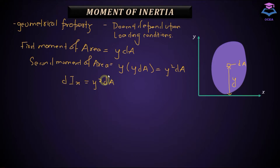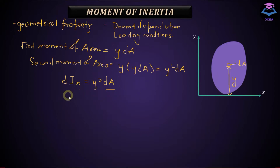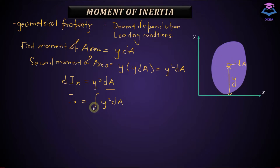This is the moment of inertia for the differential element with respect to this axis. If you want the moment of inertia for the whole plane area, you integrate both sides. The left-hand side becomes IX and the right-hand side becomes the integral of Y²·DA. For a continuous plane area, you integrate all the DA elements and take the second moment of area with respect to the axis about which you're calculating moment of inertia.